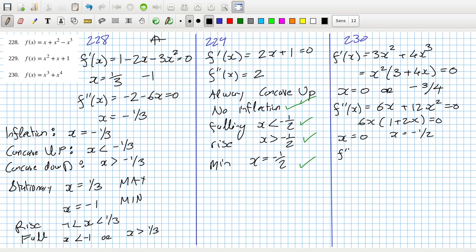So now the third derivative will be 6 plus 24x, and the third derivative at 0 is positive. So let's see what we get. Let's start off with x is 0, so it's actually a rising saddle.